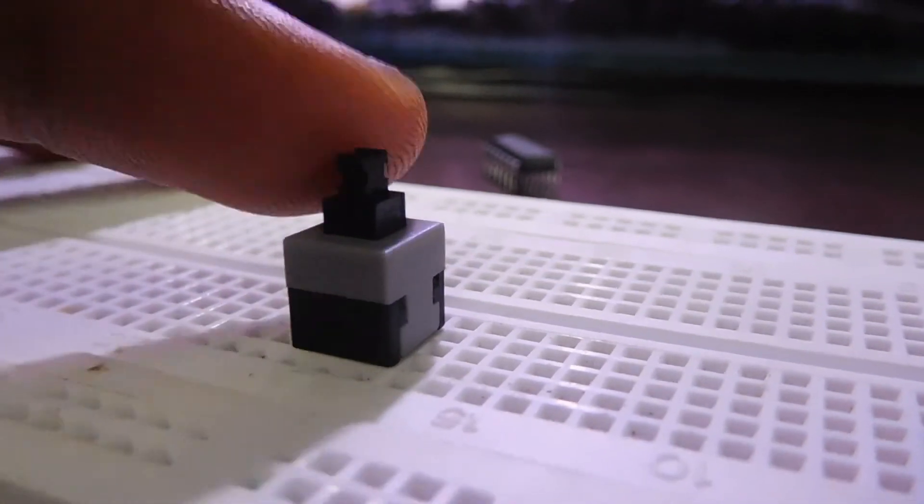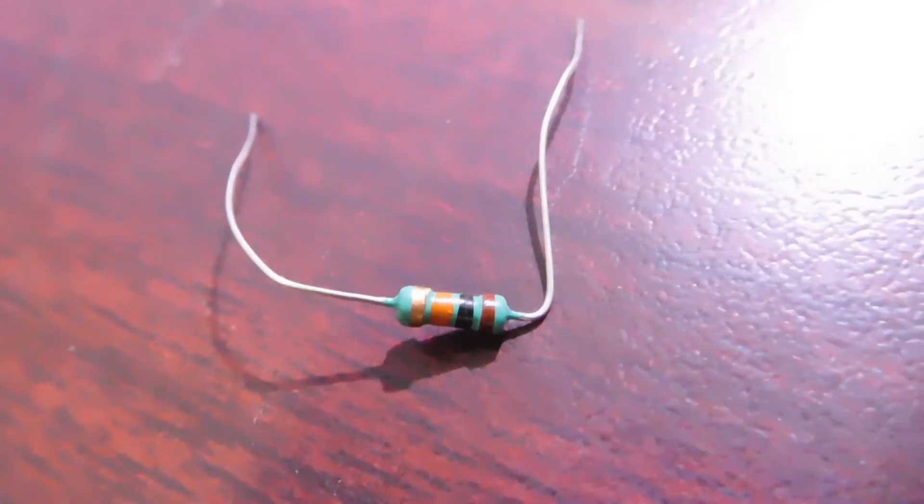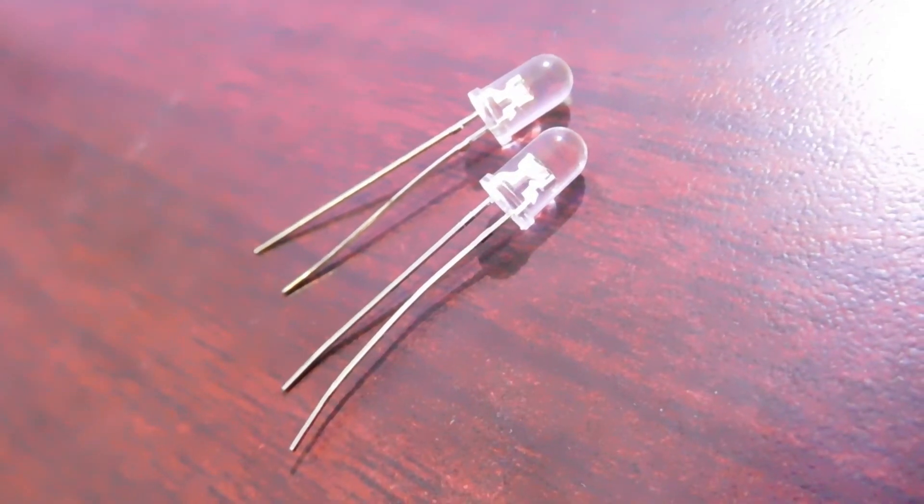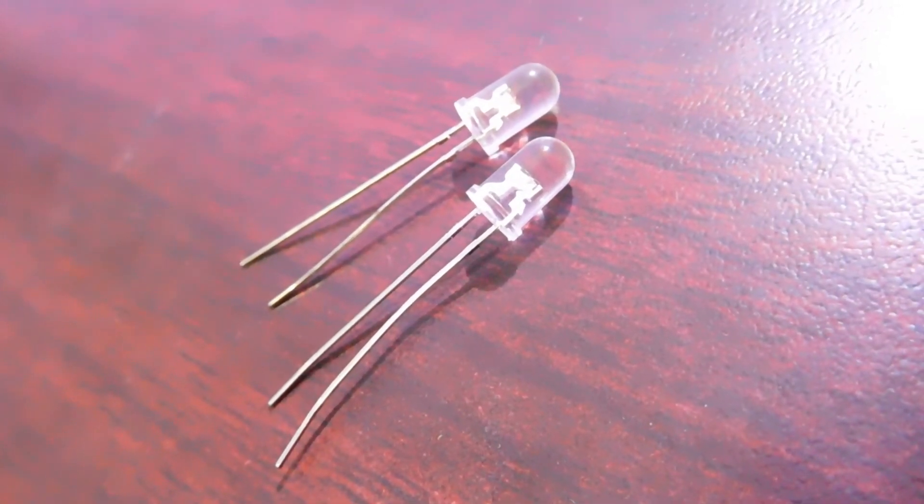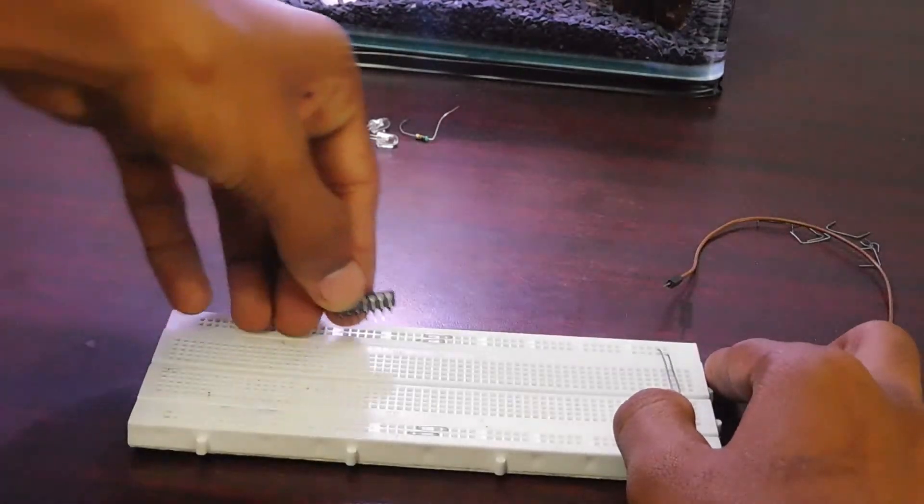You will also need some passive components like a switch to give the input to the gate, a pull-down resistor, two LEDs, one for knowing the input, another for knowing the output, some jumper wire to conduct the electrical signal and current, power for the circuit, and a breadboard for creating the circuit.